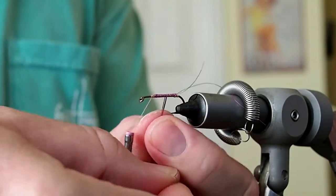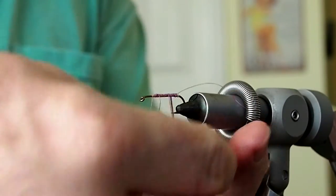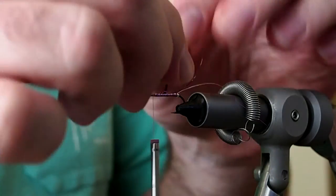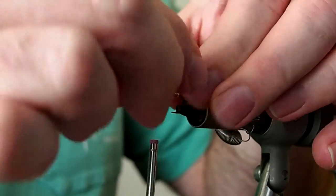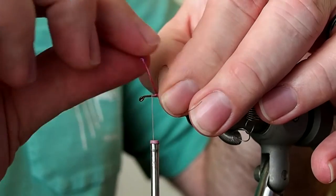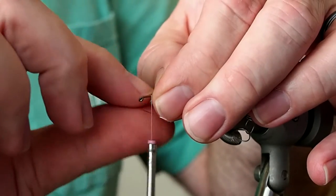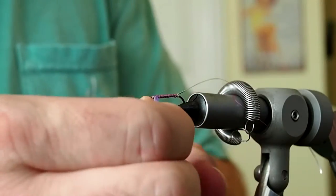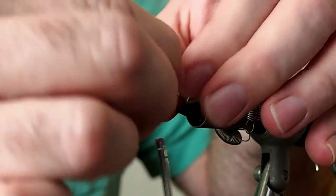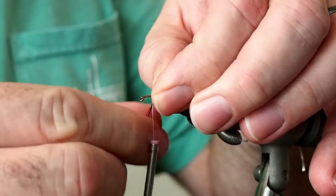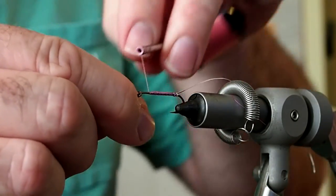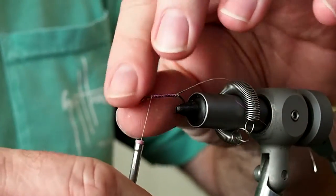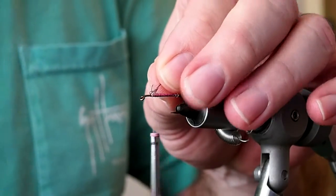If you have a couple short ones there you can just come back and trim those out and pick it up on the way back up. And we'll just capture with our thread and snip away the excess.